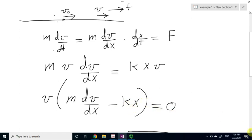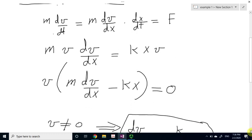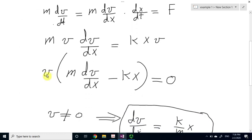Now, for this to be 0, there are two solutions. One solution is that velocity is 0. So the object will have velocity equal to 0. And because the velocity is 0, so the force will be 0.